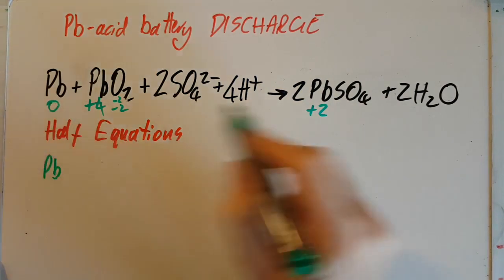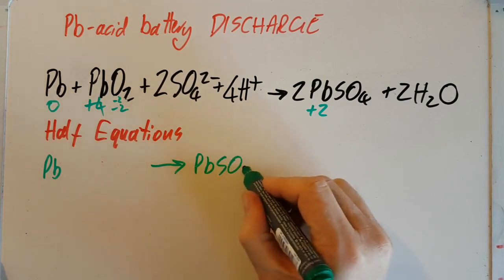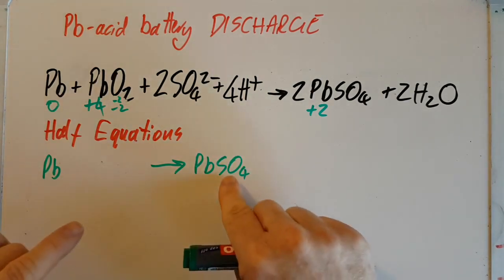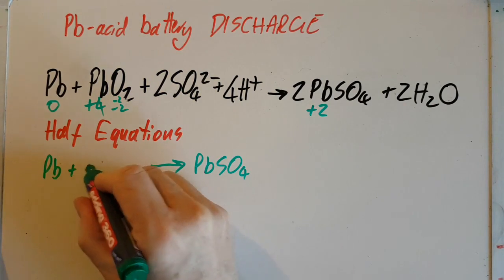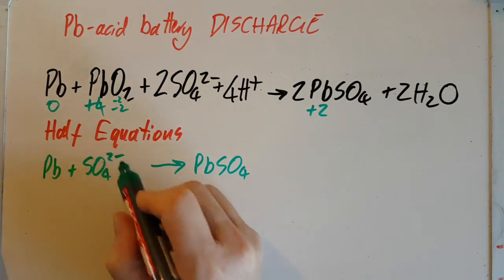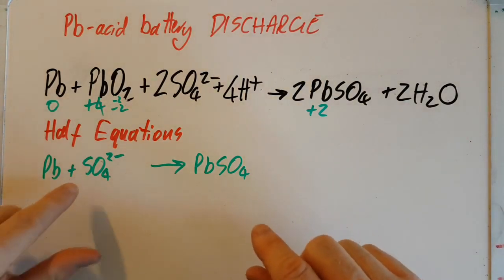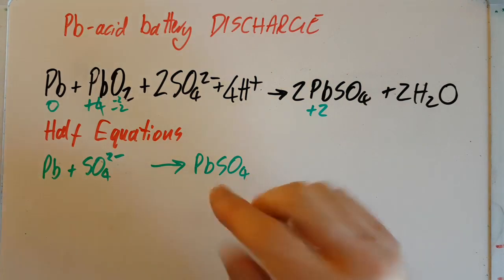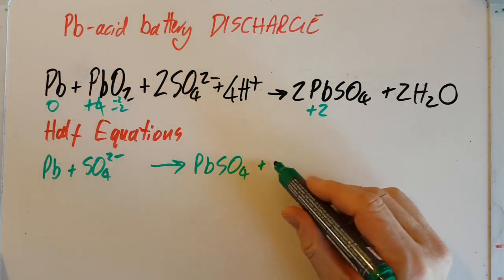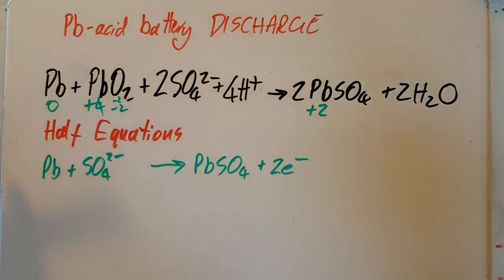All right. So the lead turns into lead two sulfate. We've got to balance it. Well, there's sulfate on this side, so I had to have added sulfate on that side. It can't just be SO4. It has to be SO42 minus. SO4 doesn't exist. And now we have a charge imbalance. This has a negative two charge, and this has a neutral charge. So I'm going to add two electrons to balance that out. So I've balanced that first half equation there.